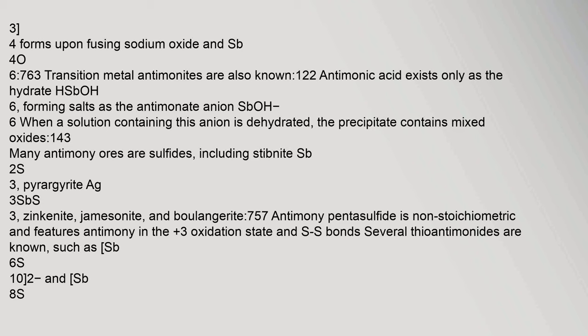Antimonous acid Sb(OH)3 is unknown, but the conjugate base sodium antimonite Na3SbO3 forms upon fusing sodium oxide and Sb4O6. Antimonic acid exists only as the hydrate HSb(OH)6, forming salts as the antimonate anion Sb(OH)6⁻. Many antimony ores are sulfides, including stibnite Sb2S3, pyrargyrite Ag3SbS3, zinconite, jamisonite, and boulangerite. Antimony pentasulfide is non-stoichiometric and features antimony in the +3 oxidation state with S–S bonds. Several thioantimonides are known, such as Sb6S10²⁻ and Sb8S13²⁻.